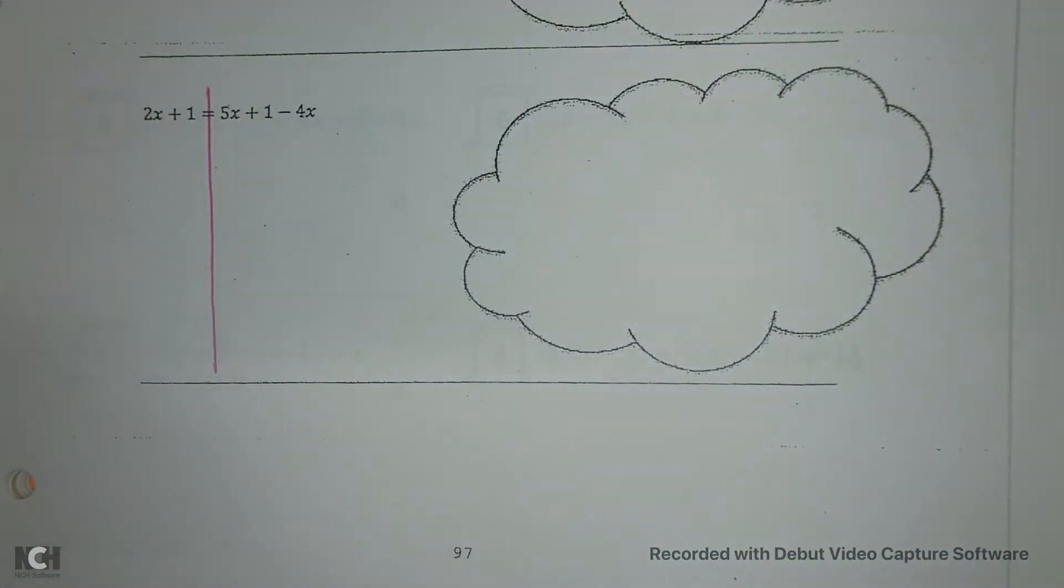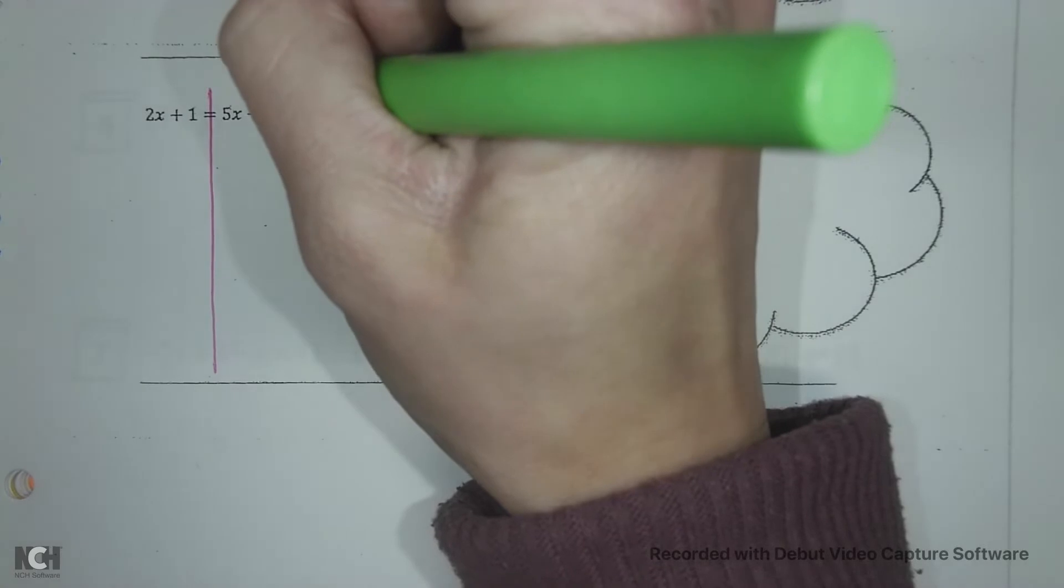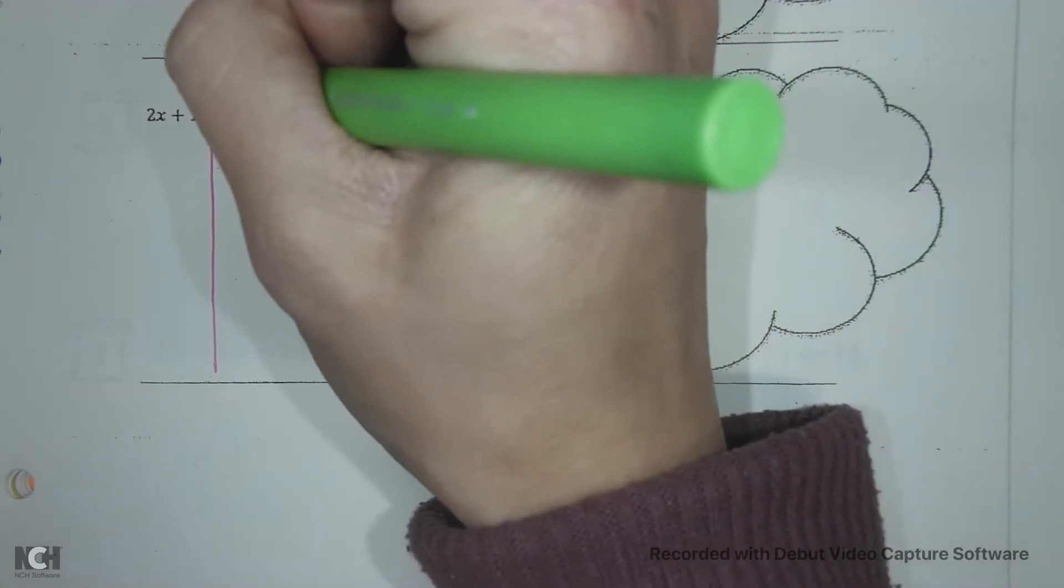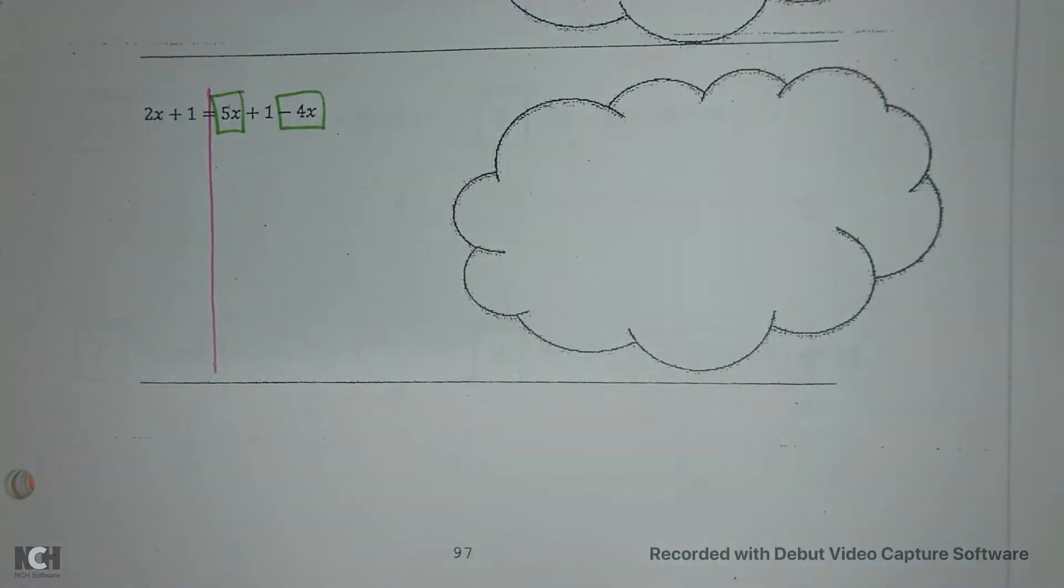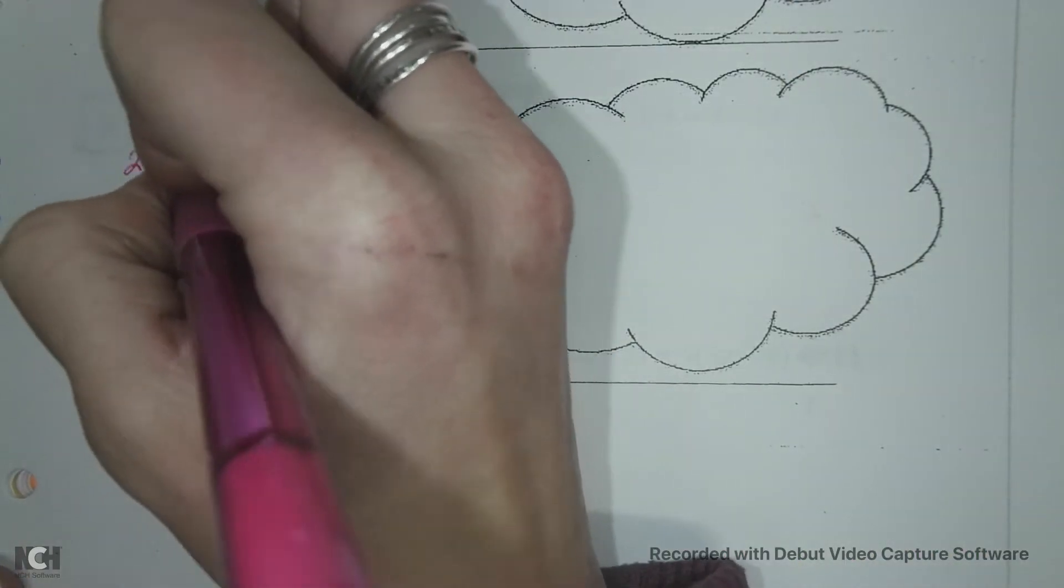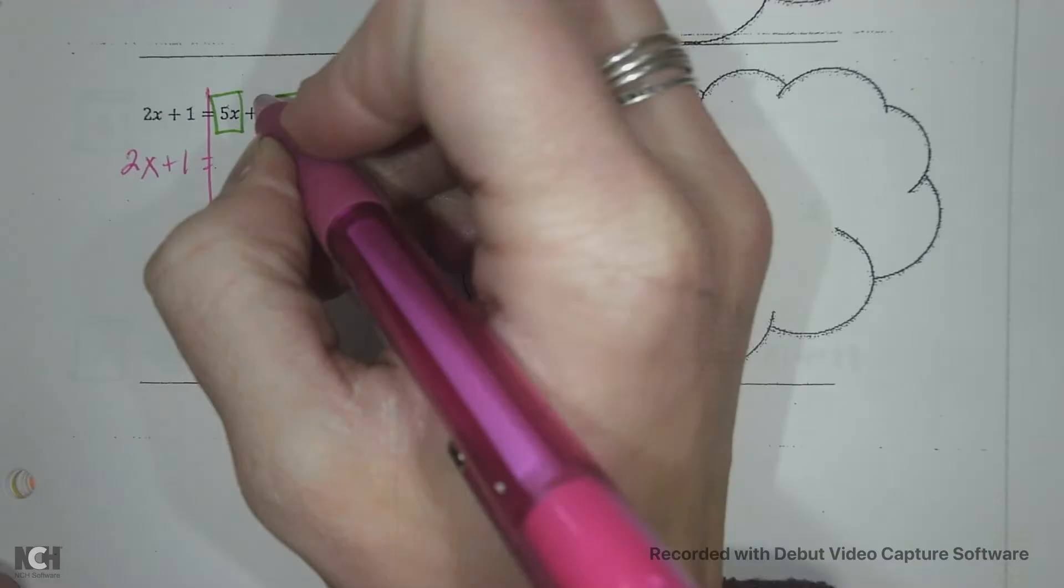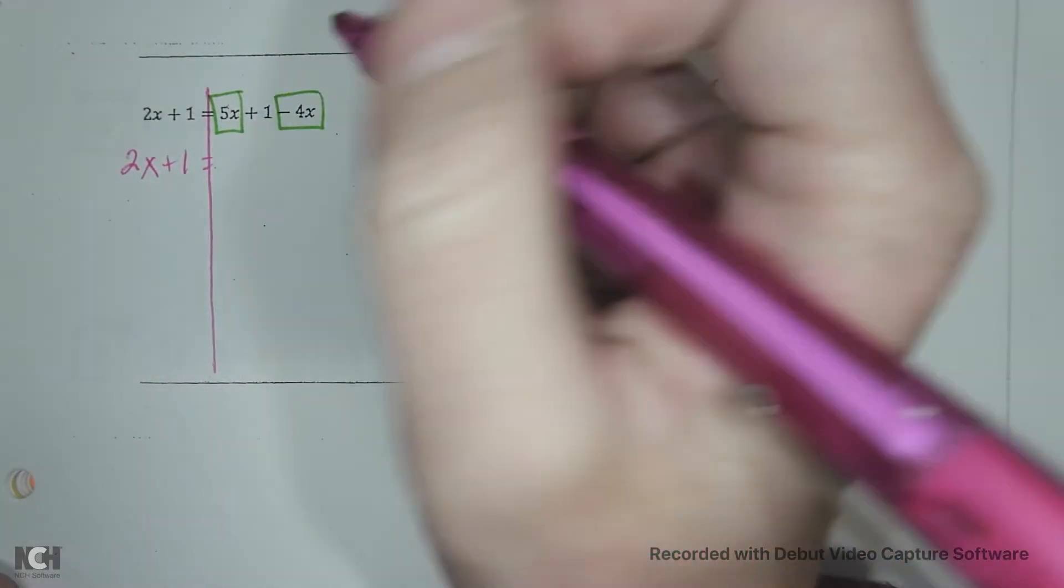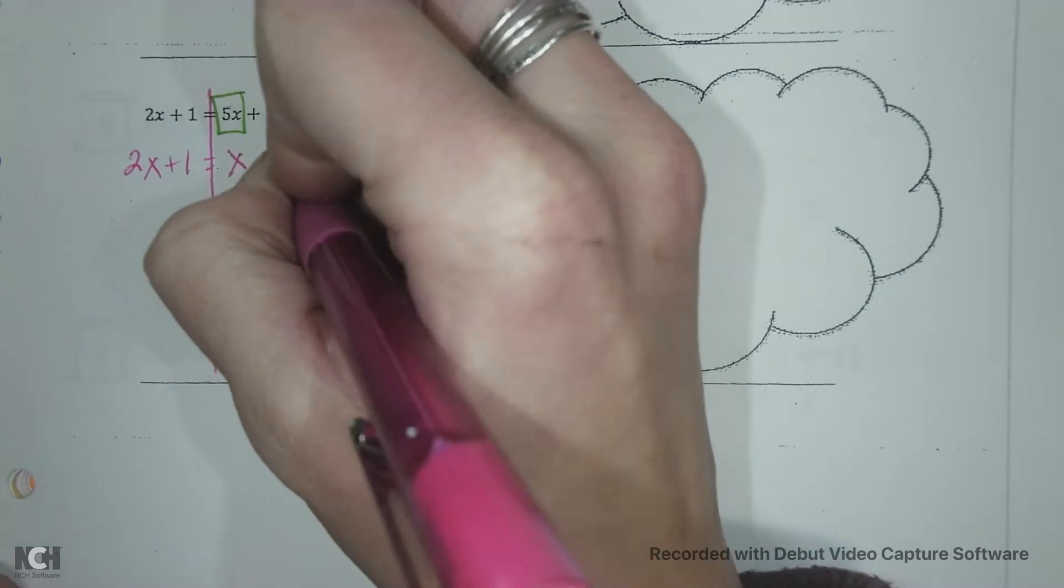So we're going to leave that alone. On the right hand side, I have a negative 4x and a 5x, which are like terms because they both have a variable. So we're going to combine them together. So on the left, I still have 2x and 1. And then on the right, 5x's and I take 4 away gives me 1x and 1.